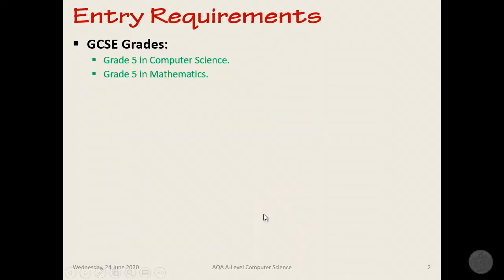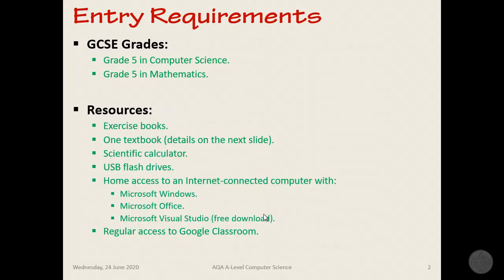So the first thing is entry requirements. In order to study computer science further, you need to have already studied it at GCSE. Mathematics is absolutely essential to progressing further with computer science. In terms of resources, relatively straightforward, we'll provide you with all of the exercise books you need.